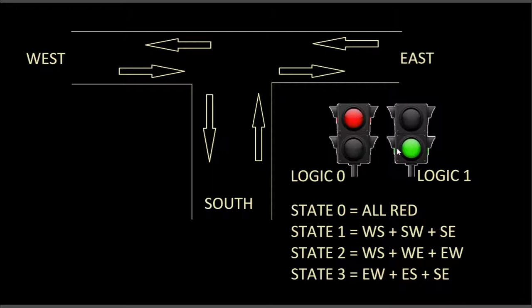When that bit is 0 then the light will be red. When the bit is 1 the light will be green.